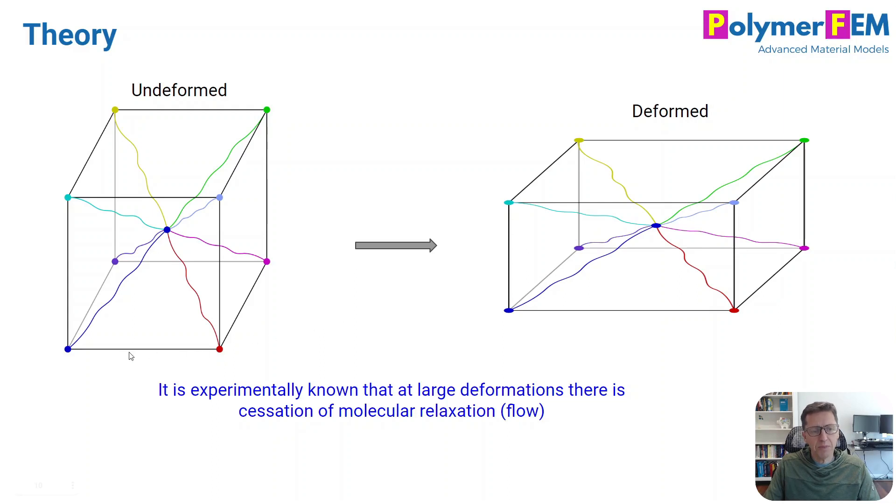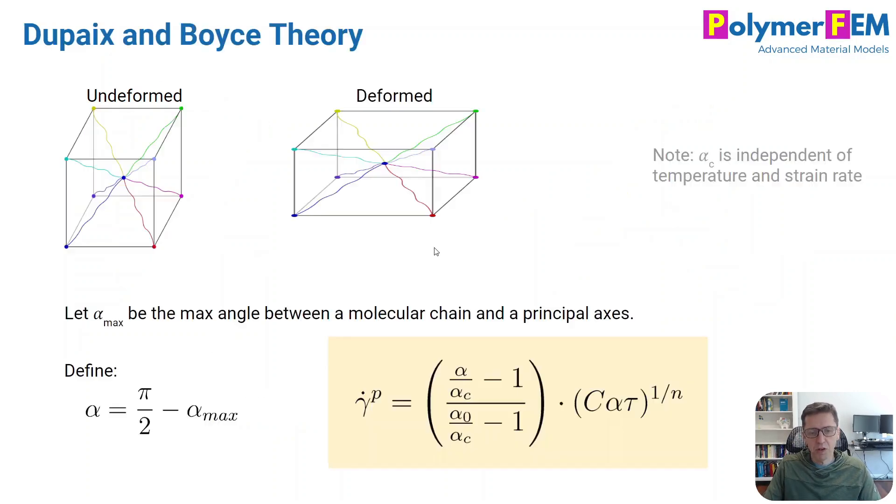Well their argument was we're going to use the eight-chain, Arruda-Boyce eight-chain model that was developed for hyperelastic material models. So what they did propose was, let's look at the orientation between one of these eight-chain molecules that goes from the center of this representative unit element to the corners. And we look at the angle between that molecule and the three principal directions. So there are three angles and then we find the angle of those three that is the largest in magnitude. I'm going to call that alpha max. And then I defined another variable called alpha to be pi over 2 minus alpha max, sort of a complementary angle.